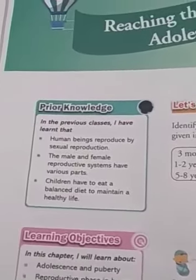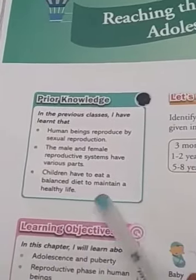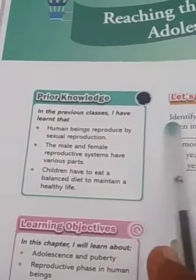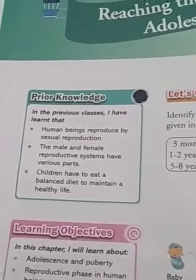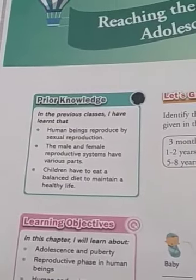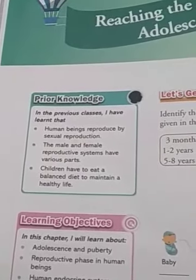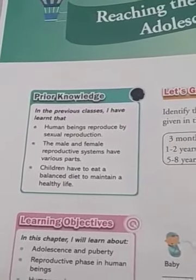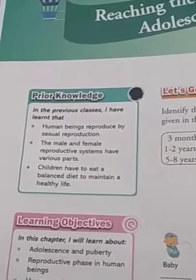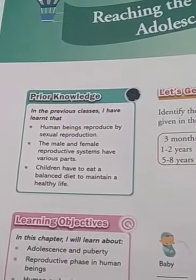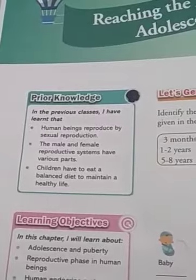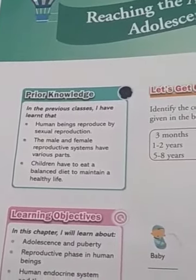From our previous knowledge, we know that human beings reproduce by sexual reproduction, the male and female reproductive systems have various parts, and children have to eat a balanced diet to maintain a healthy life. We know these things from our previous classes.